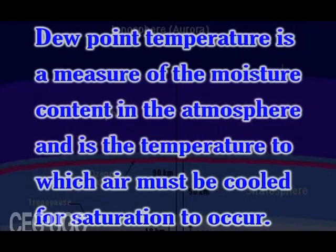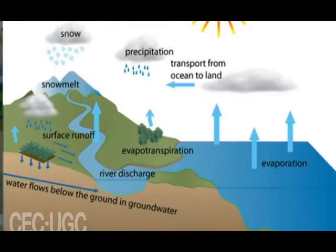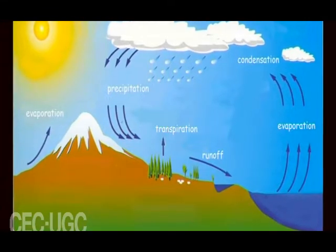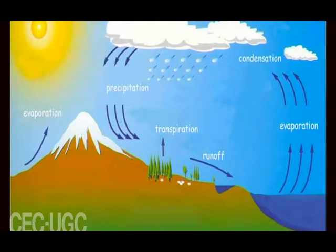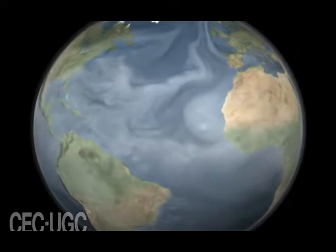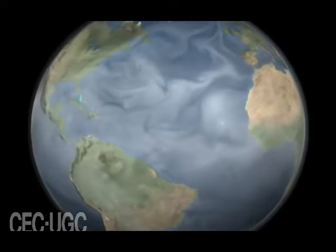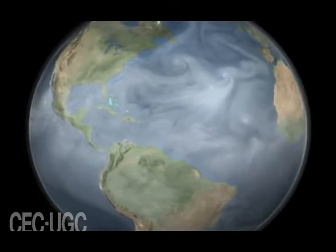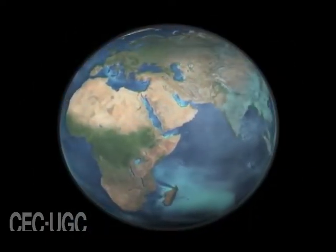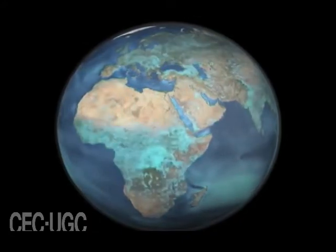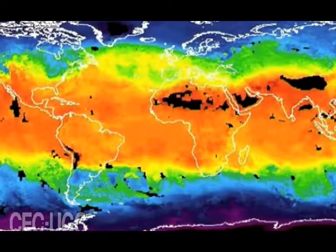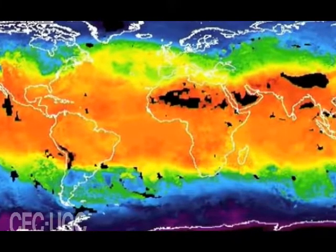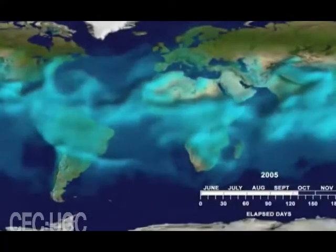Dew point temperature is a measure of the moisture content in the atmosphere and is the temperature to which air must be cooled for saturation to occur. When saturation is reached, condensation occurs and such things as dew, frost or fog may occur. The dew point temperature is a good indicator of the actual amount of water vapour in the air. High dew point temperatures indicate high water vapour content, meaning the air is moist. Low dew point temperatures indicate low water vapour content, meaning the air is dry.